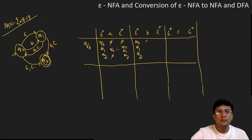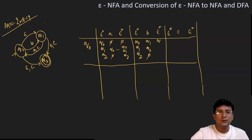q0 on 'b' moves to q1, and q1 on 'b' moves to q2, and q2 on 'b' is not defined. The epsilon closure of q1: those states which I can move to by only taking epsilon — q1 can move to only itself. So epsilon closure of q1 is {q1}. And epsilon closure of q2: since there is no epsilon transition from q2, it can only go to itself, so epsilon closure of q2 is {q2}.